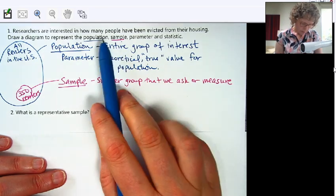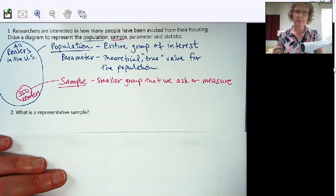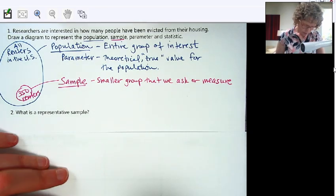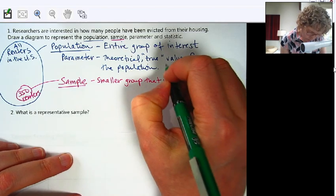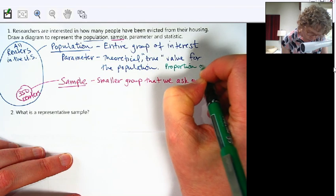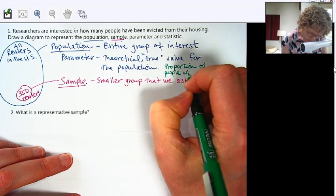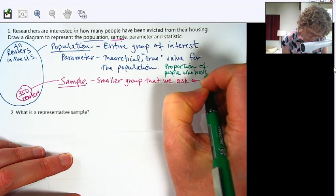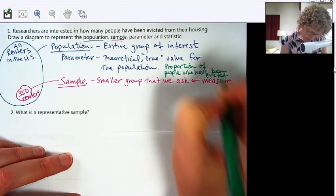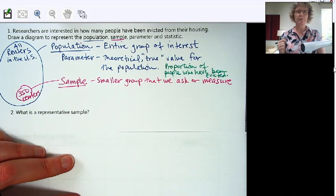In this case, we probably wouldn't say how many people, but we would say it's the percentage or the proportion of people who have been evicted. I'll use another color for that. I could have said proportion of renters versus proportion of people.